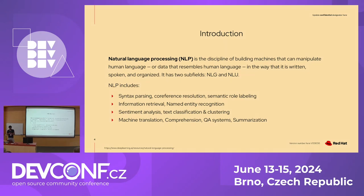Some of those tasks — for example, syntax parsing and coreference resolution were among the initial tasks that people tried to solve. Syntax parsing is basically taking unstructured text and getting structured entities out of it. Coreference resolution is a task where you have a story or article that talks about a person, and in the next sentence they are referred to by a pronoun like 'they' or 'them,' and you want to reference that pronoun back to that person — so that's a task for computers to understand.